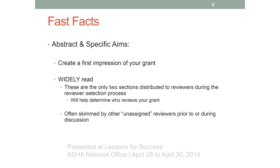The abstract and specific aims create a first impression of your grant. As we've already heard from other presenters, these are widely read sections — they're the only two sections distributed to the reviewers. Some SROs send around portions of the grant, usually the abstract and specific aims, to have potential reviewers look at it and give feedback on whether they'd be able to review that grant and to what level they'd be a match. Many folks on the panel will also read those sections just to get a sense of what your grant is about.